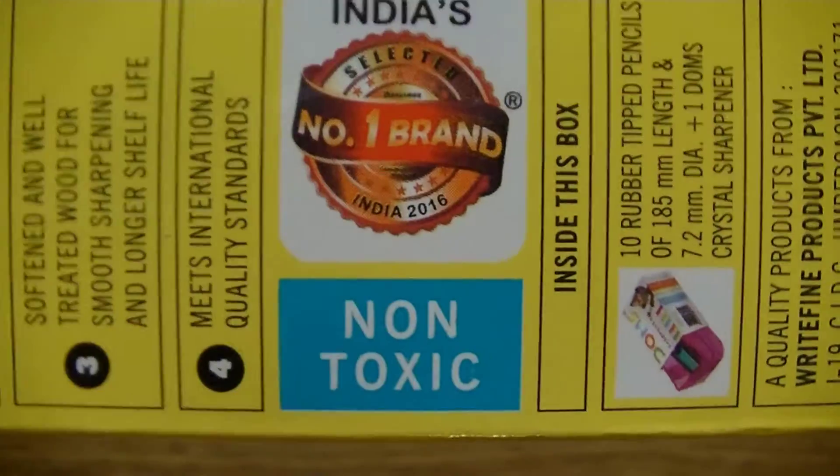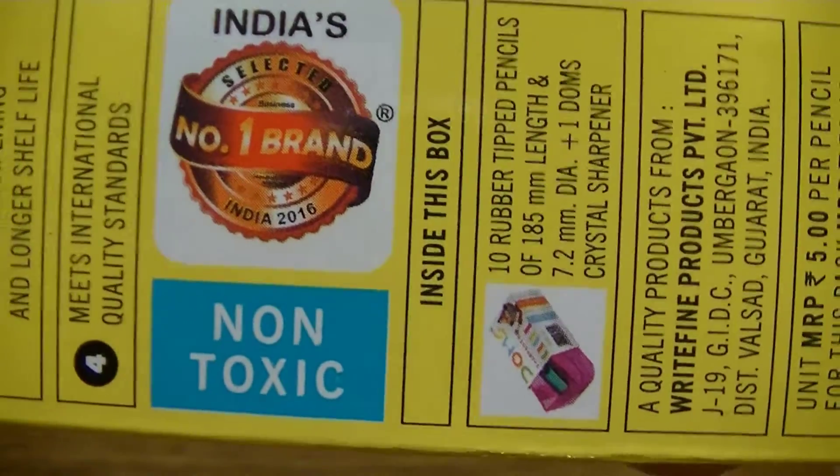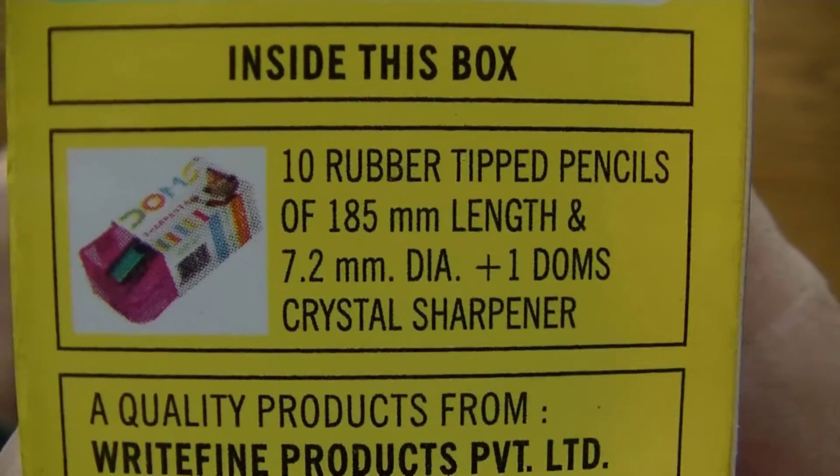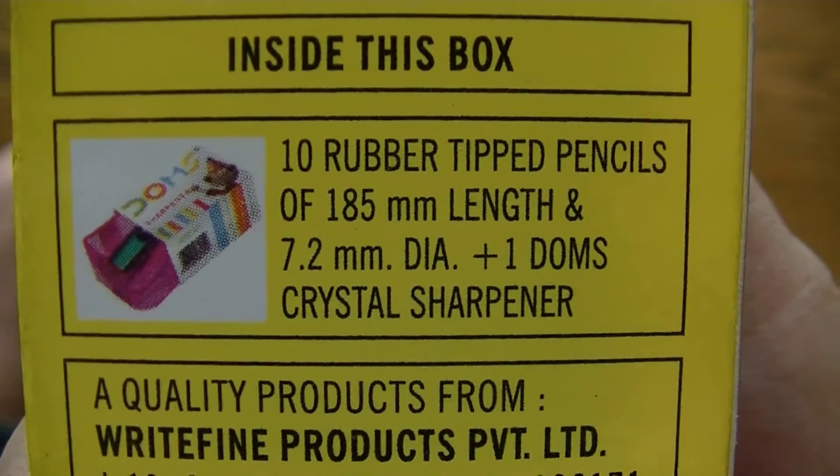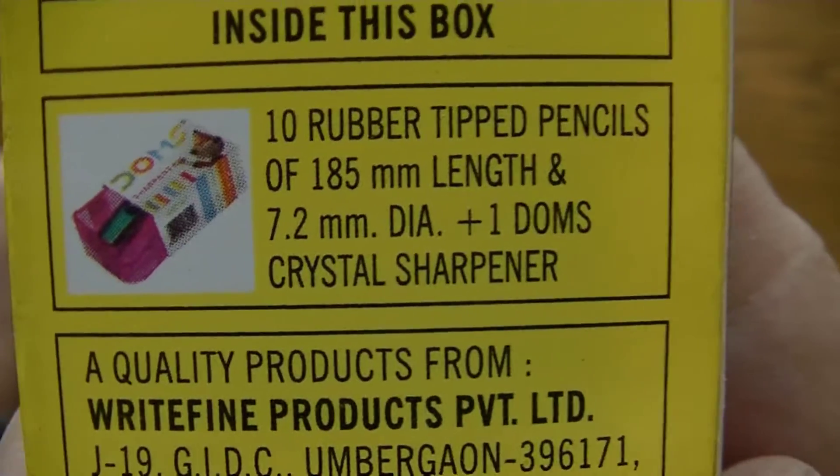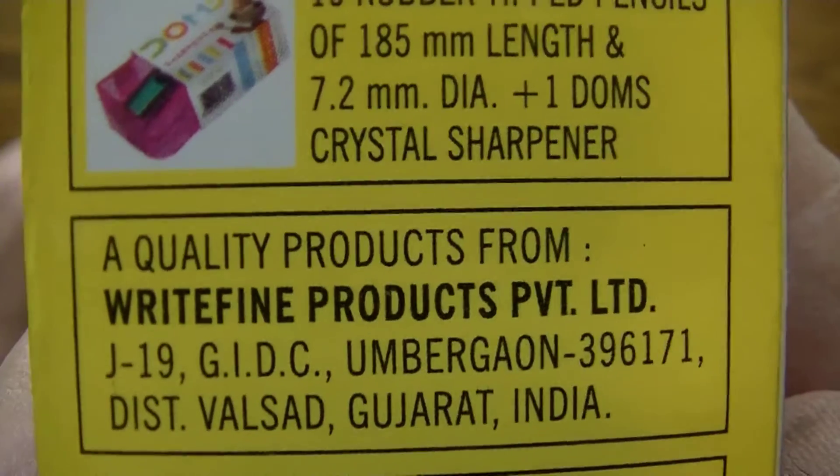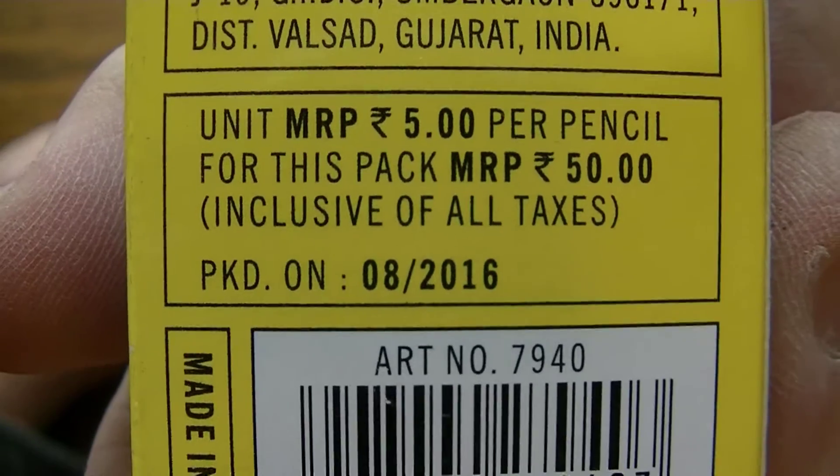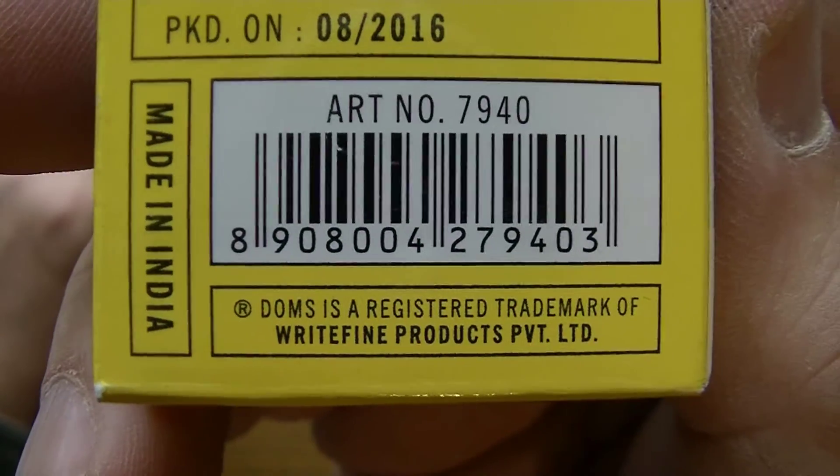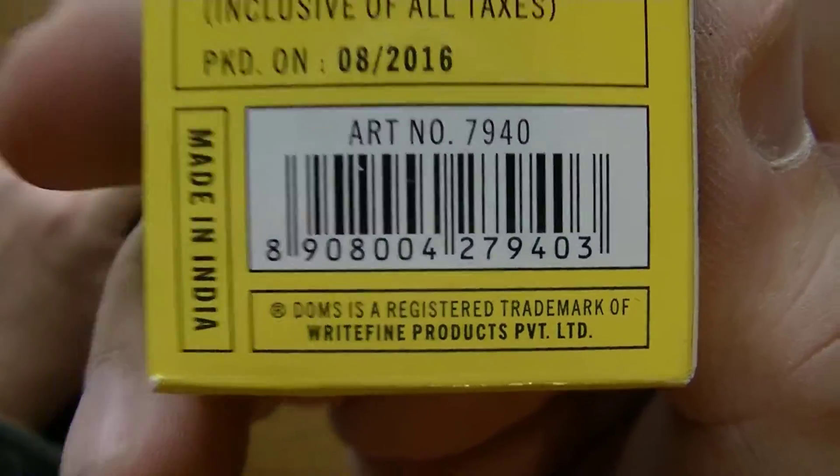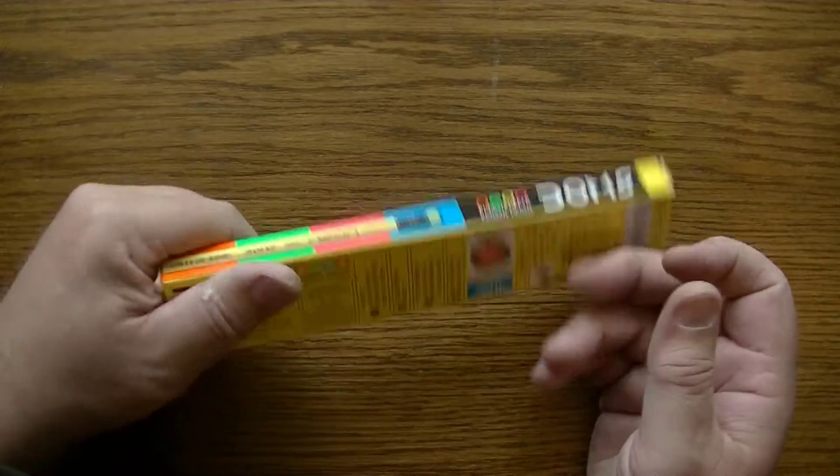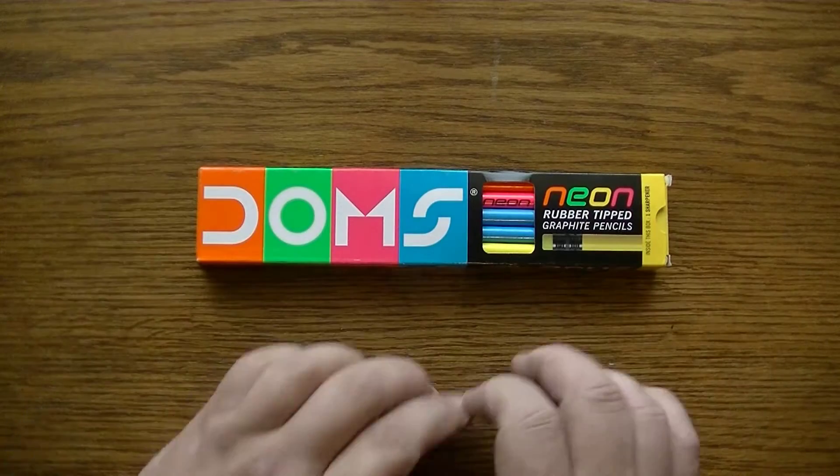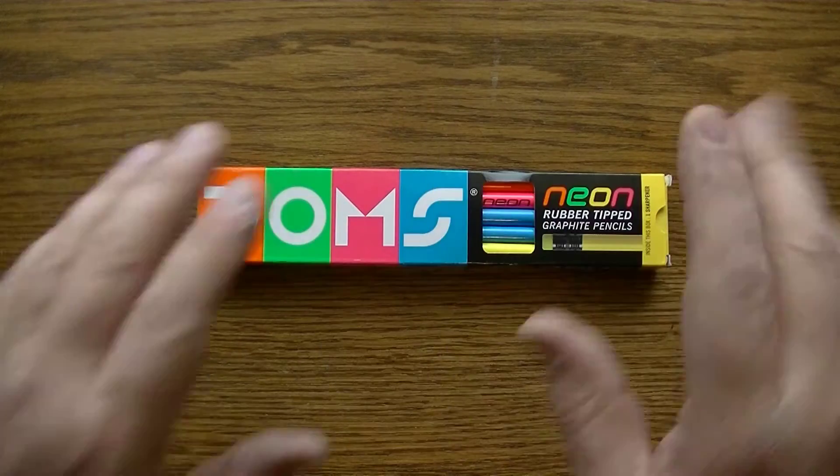India's number one brand. I think they only got like one company makes all this stuff, right? I don't know. Inside this box you're going to find 10 rubber tipped pencils of 185 millimeter length and 7.2 millimeter diameter, plus one Dom's crystal sharpener. All right. And there's all kinds of other details there and there's a barcode if you want to scan it. All right, enough of that. I think we've pretty much examined this box thoroughly. So we're done. Thanks for watching. Oh wait a minute, sorry. I know, we're going to crack the puppy open. A little humor there.